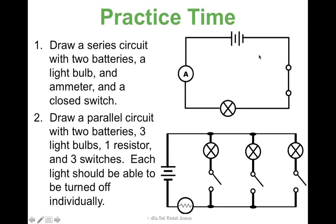For the parallel circuit: two batteries, three light bulbs — and since they need to be turned off individually, they need to be on separate branches. There are my three switches to turn them off. It didn't say if they needed to be closed or open, so I just drew them open. Then the resistor — no specifications given, so I just placed it on one branch.